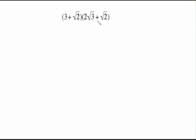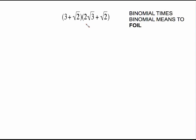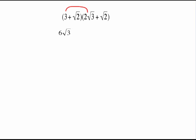To go from binomial times binomial, you have to use FOIL. When we FOIL this out, it's the same exact process — you just have to deal with the radicals. First step is first times first: 3 times 2 gives me 6, with the radical 3 tagging along.